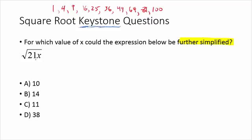One possible approach is to start by plugging in 10: that gives us the square root of 210, and then you try to simplify by pulling a perfect square out. You'd have to check each answer by plugging it in. This will take a little while, but you're not timed on the Keystone test, so it's a totally valid option.